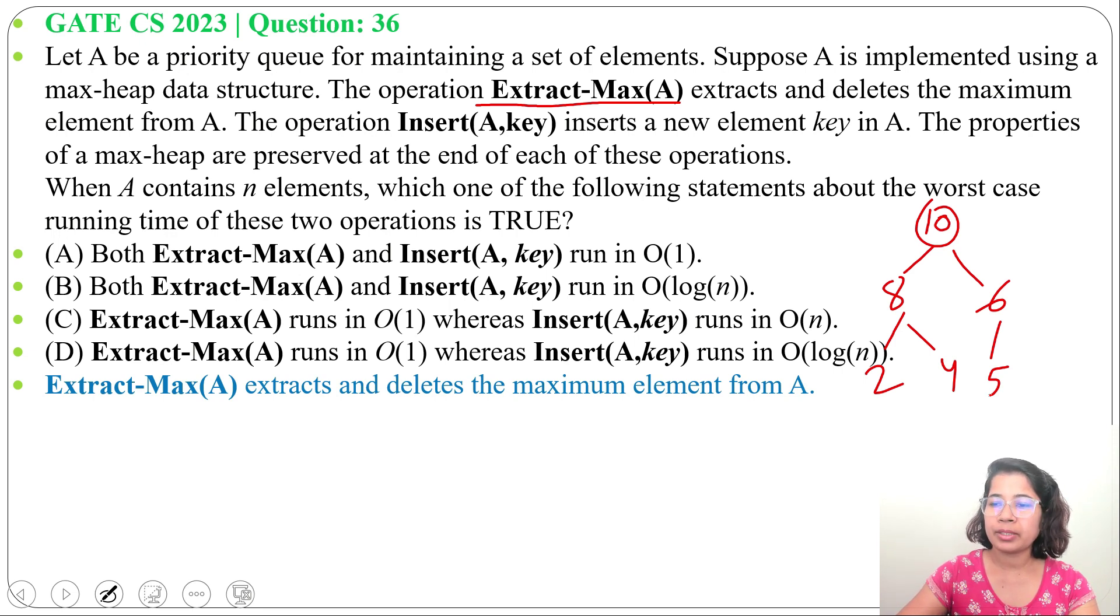Now in Extract-Max, what do we do? We extract the maximum, meaning we pick the root and delete it. So for deleting 10, we swap 5 with 10. Now 5 comes here, 10 comes here. Then we can delete 10.